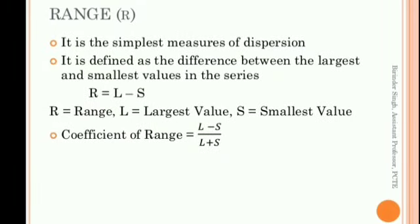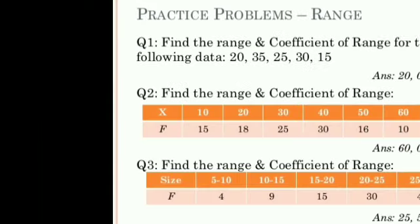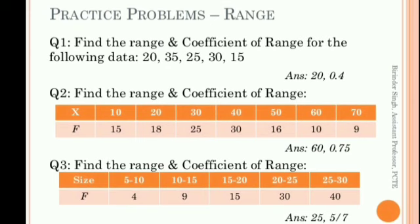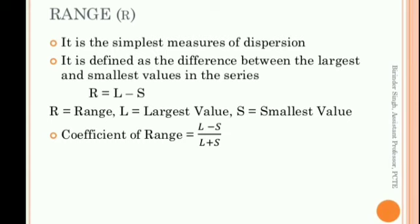Next one is range. Range is the simplest measure of dispersion, which defines the difference between the largest value and the smallest value — that is, highest value minus lowest value. R = L - S, where L is the largest value and S is the smallest value. To find coefficient of range: (L - S) / (L + S). For example, if the highest value is 9 and the lowest value is 1, then range = 9 - 1 = 8. So in today's video we have understood the theory — what is meant by Measures of Dispersion, its properties and its objectives. Hope you are clear with this video. Thank you students for listening.